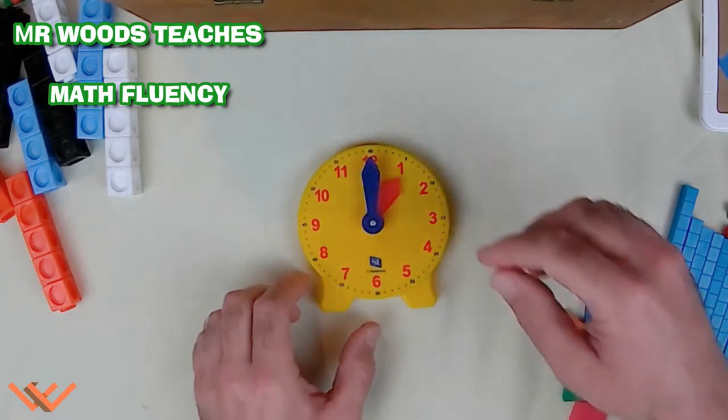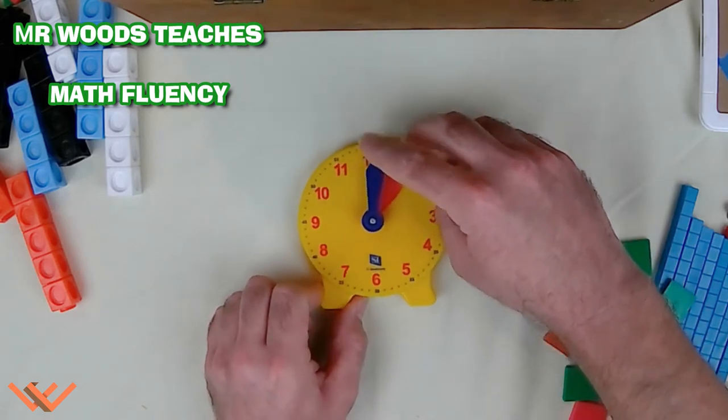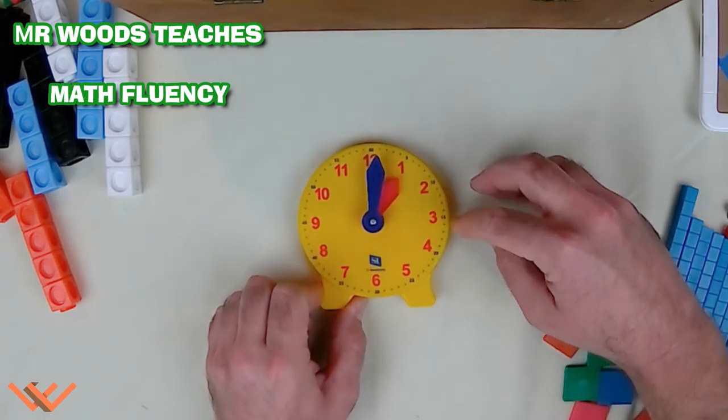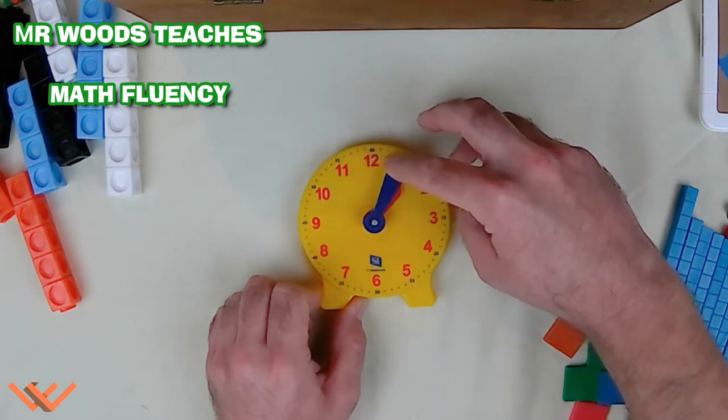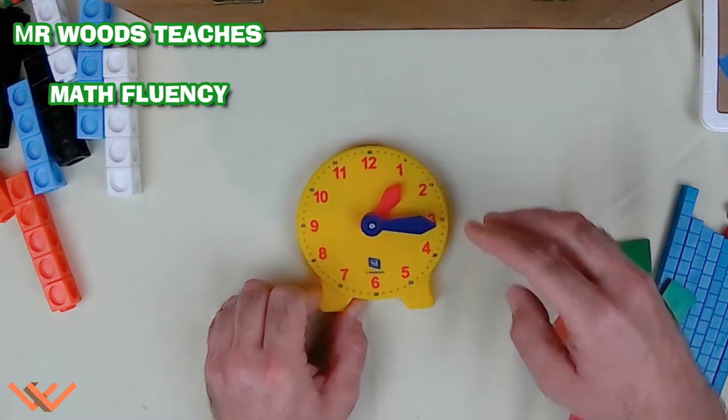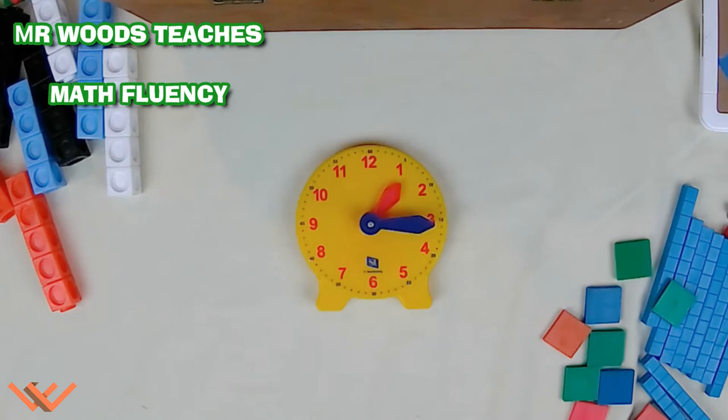Now, if I want to go by 15s, each one of these you see like 5, 10, 15. That's how many minutes. So, here we go, 1:15. See how I'm manipulating that?